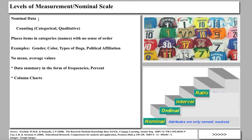The first scale and the weakest scale, giving us the least information, is the nominal scale. The attributes are only named. The political party example we looked at was nominal data — we were just naming Republican, Independent, or Democrat. Just the name.